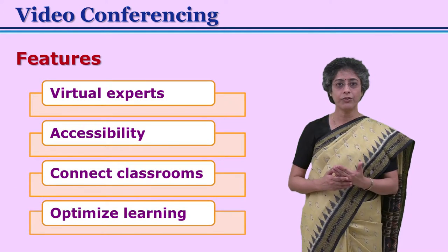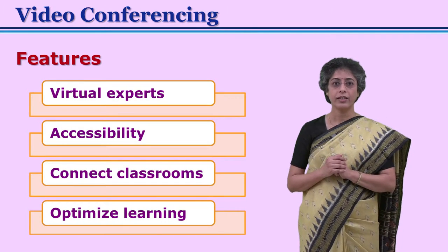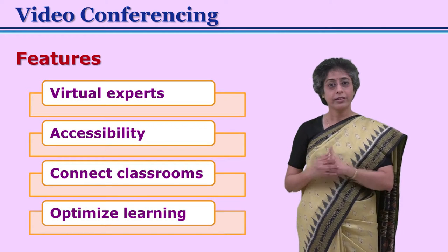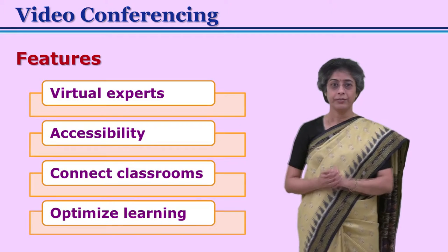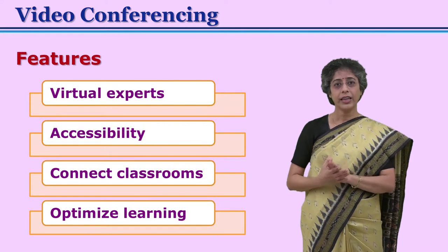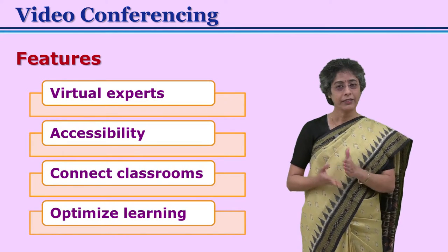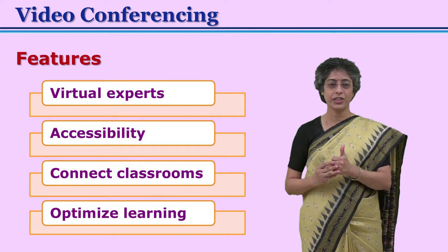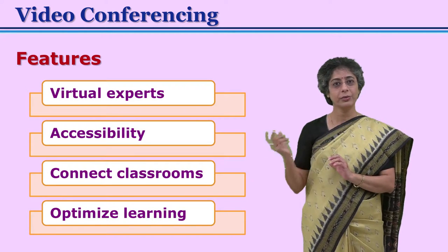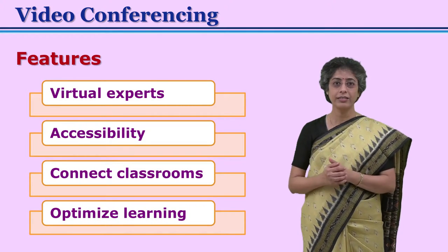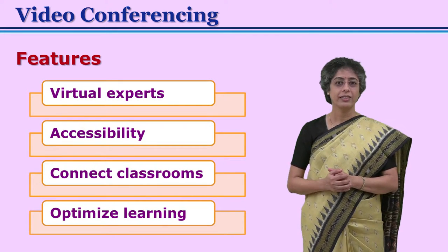Let us see what the features of video conferencing are. From its definition, we have learned that in video conferencing there is exchange of images, audio, and visuals. Virtual experts can communicate through video conferencing with learners. Learners can access video lectures from anywhere but synchronously, because listening to experts and asking them questions is also expected here. Two or three classrooms can be connected to each other. For example, if an expert is delivering a session from one campus, other campuses or institutions can get connected and access the same session. Because we can reach many campuses, many institutions, and many learners, learning can be optimized via video conferencing.